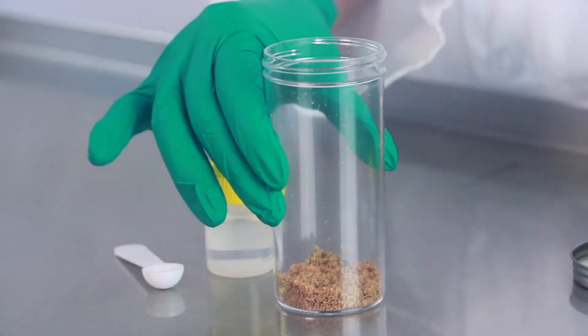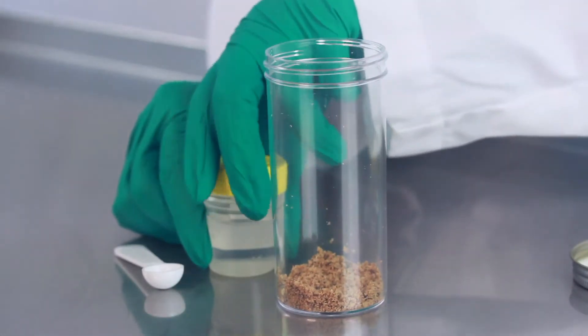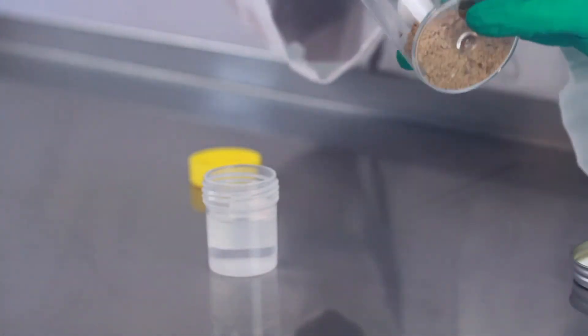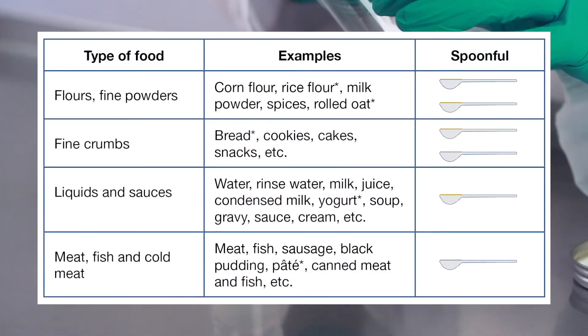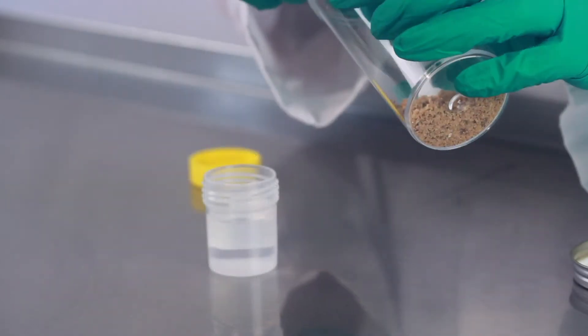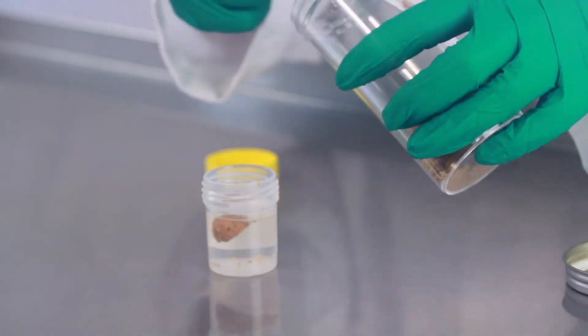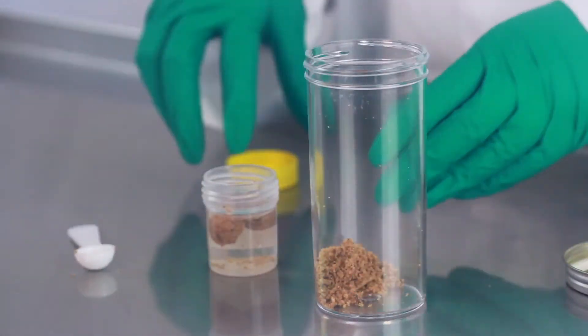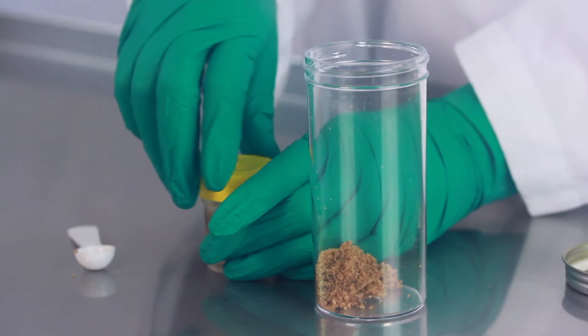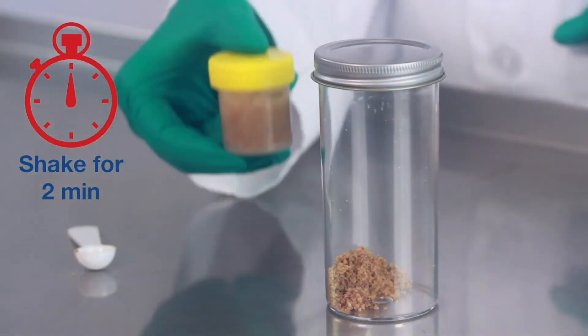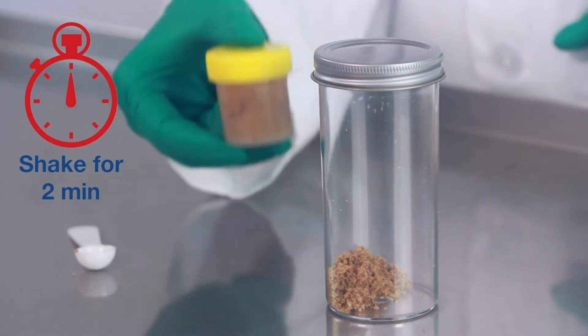Open the extraction bottle with the yellow cap and use a provided spoon. Fill the leveled spoonful amounts according to the table provided. Shake vigorously for two minutes and let settle for about five minutes so that any solids can rest at the bottom. Settling time will depend on the type of sample.